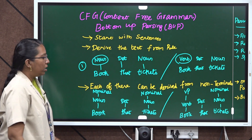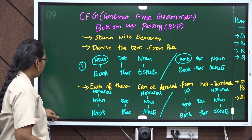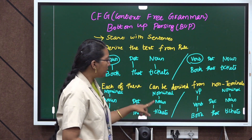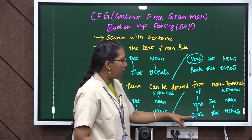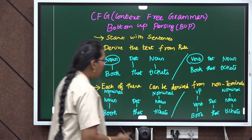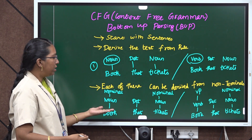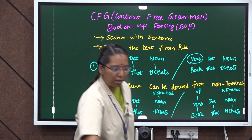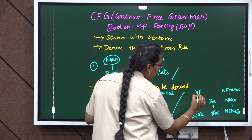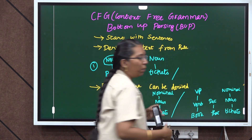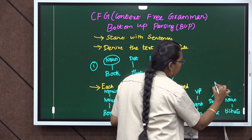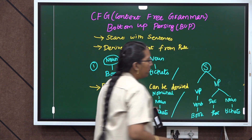Each of these can be derived from non-terminals. For example: book as noun gives nominal, 'that' is determiner, 'ticket' is noun then nominal. Similarly, book as verb gives VP, 'that' is determiner, 'ticket' is noun then nominal. We cannot derive further with the first interpretation, so we go with the second one. Determiner and noun combine to give NP. After that, we get VP and NP, which gives us the starting symbol.